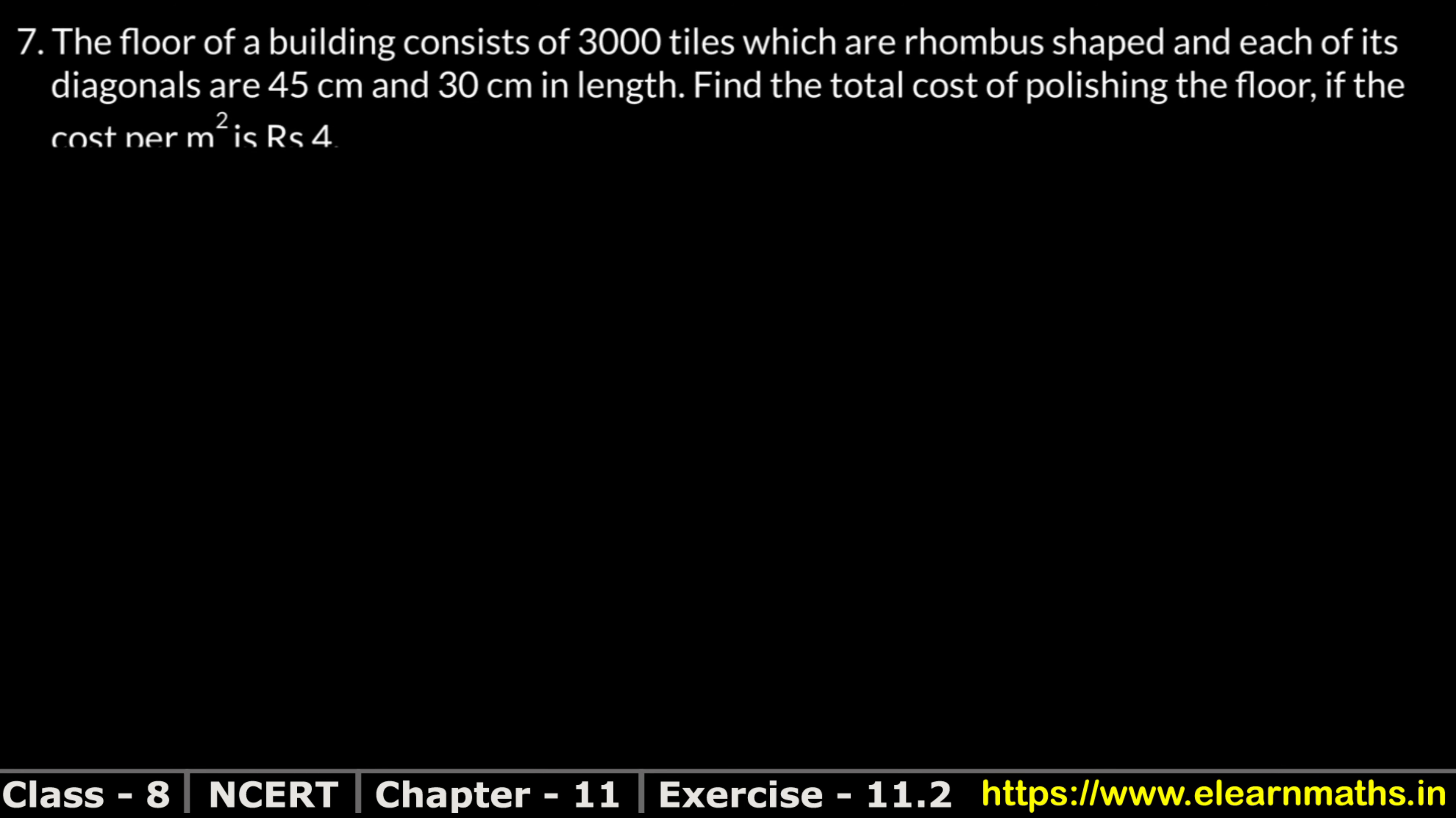Let's do question number 7 of exercise 11.2, that is mensuration. Question number 7: The floor of a building consists of 3000 tiles which are rhombus shaped. So we make a rhombus - this means the tile is in the shape of a rhombus. And each of its diagonals are 45 cm and 30 cm in length.